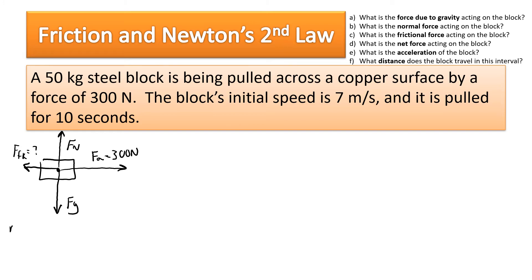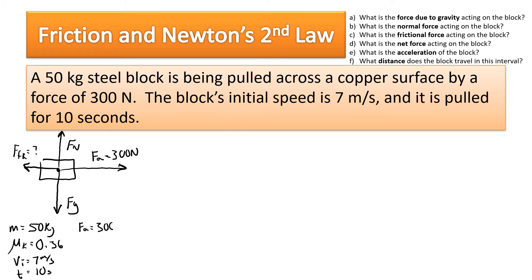The mass is 50 kilograms. We can find the coefficient of kinetic friction between copper and steel from the reference table — it's 0.36. The initial velocity is 7 meters per second, and the applied force of 300 Newtons is held for 10 seconds. We technically don't know yet if the object is accelerating because we haven't found the frictional force.